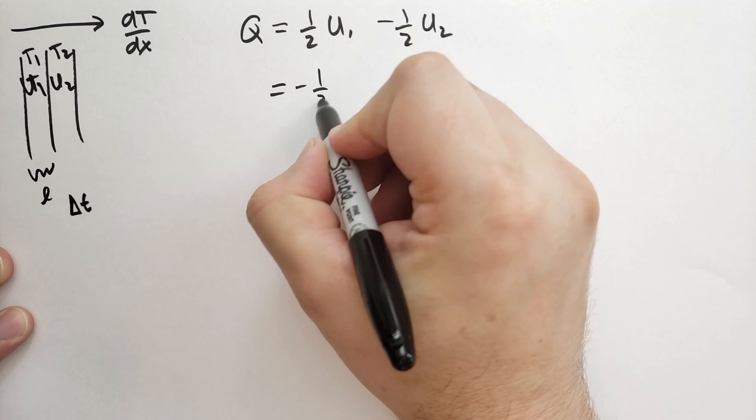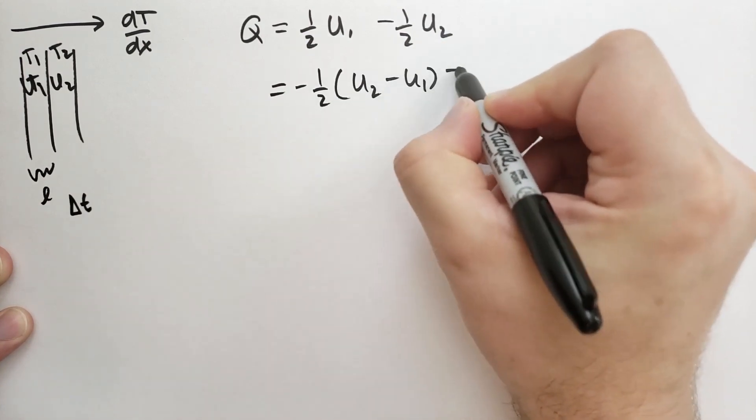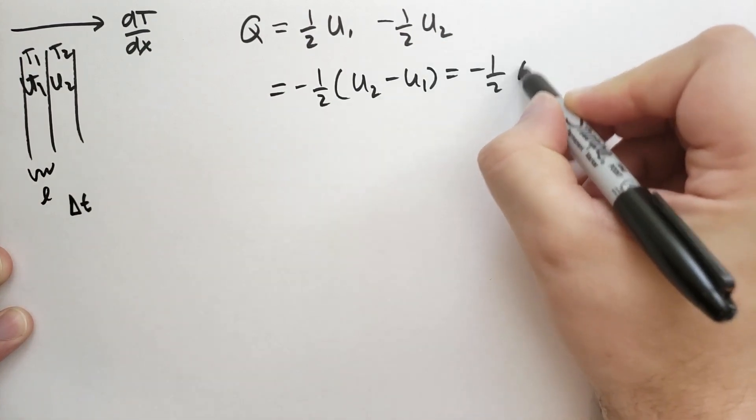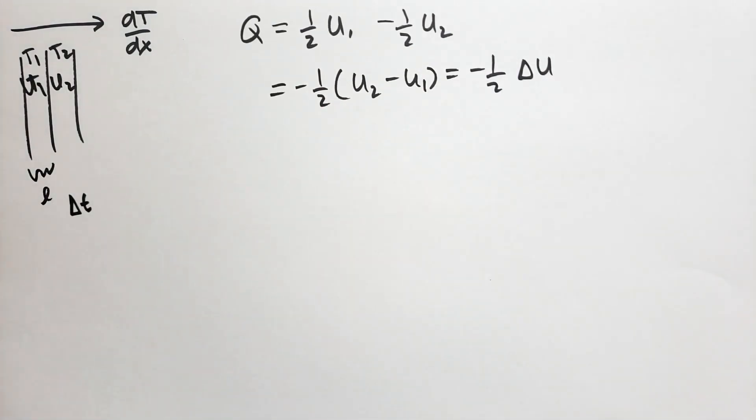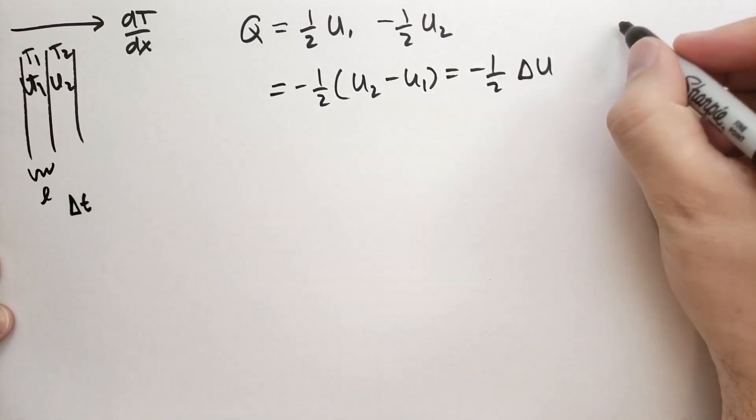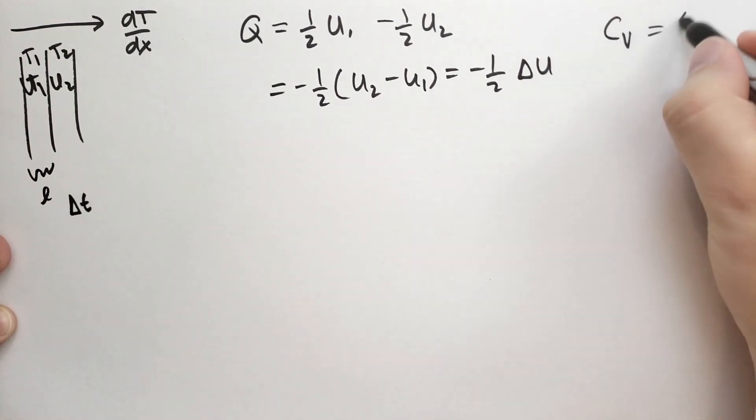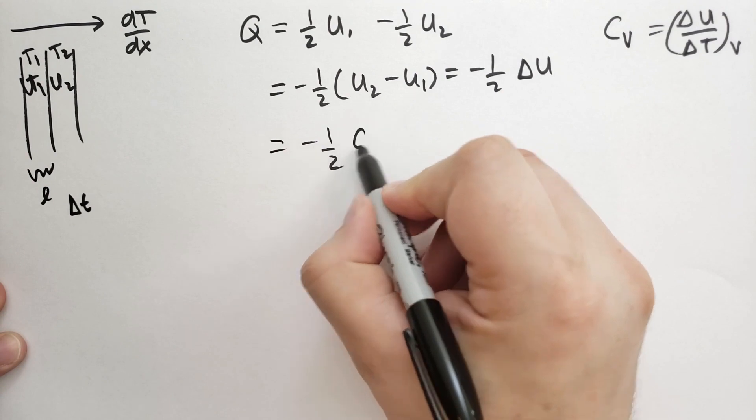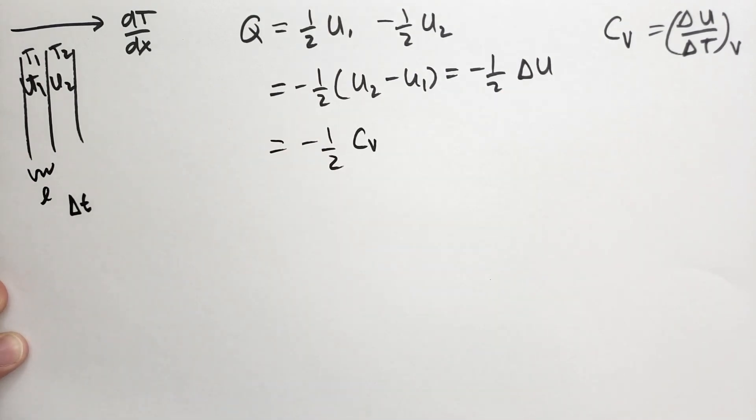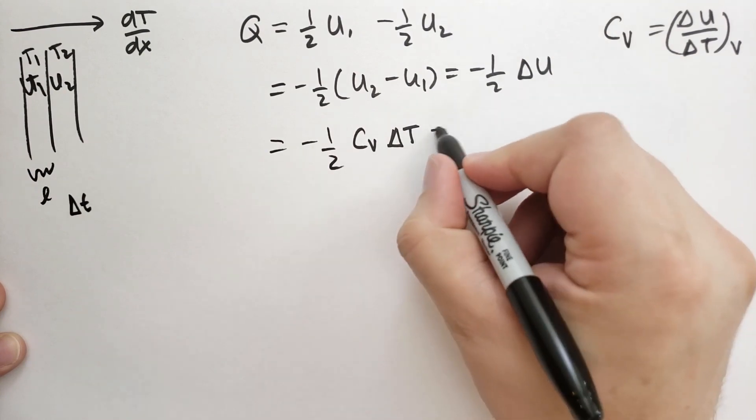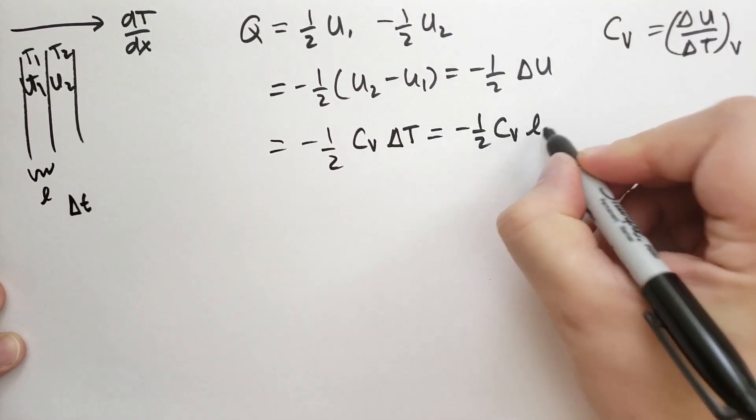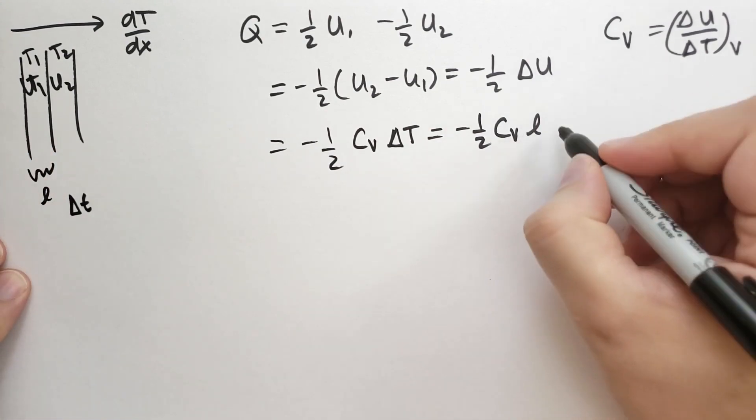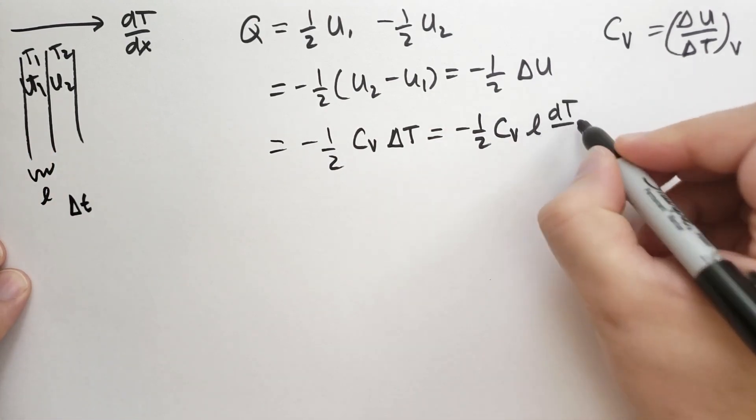We can rewrite this as minus one half U2 minus U1, which is just minus one half the delta U, the change in the internal energy. Recall that the heat capacity with constant volume is just the change in internal energy over the change in temperature, keeping the volume constant. We can now rewrite this as minus one half the heat capacity times delta T. And delta T is just the length between these two areas, that's the mean free path, times the temperature gradient.